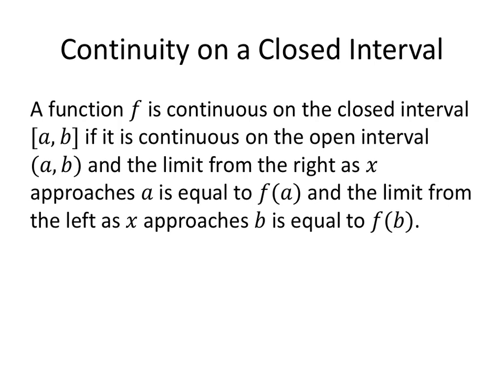A function f is continuous on a closed interval if it's continuous on an open interval, and the limit from the right as x approaches a is equal to f of a, and the limit from the left as x approaches b is equal to f of b. So our endpoints hold up with the continuity with one-sided limits.